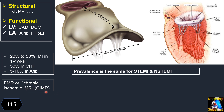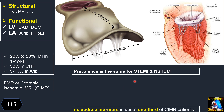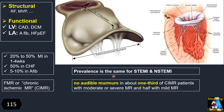Since the entity of ischemic functional MR is unique, some specialists prefer to use the term 'chronic ischemic MR' instead of functional MR. Remember that functional MR due to ischemia can happen in both non-STEMI and STEMI types — the incidence of MR in both is the same. Also remember that one third of patients with ischemic functional MR of moderate to severe degree, and half of patients with mild MR, cannot be detected by murmur on stethoscope.